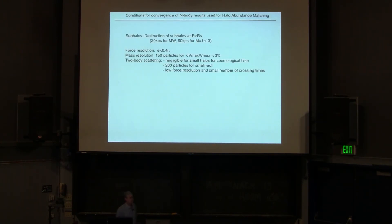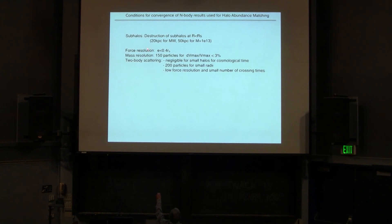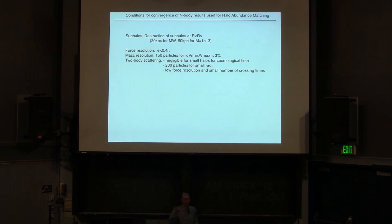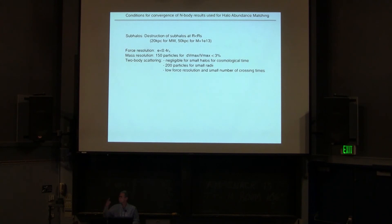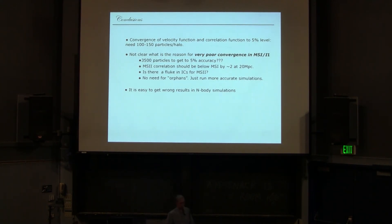To summarize: the conditions needed to run simulations to get convergence of all statistics. Two-body scattering is basically negligible, because the resolution is low and NFW halos are structured such that you can run simulations with even 50 particles and the halo doesn't dissolve — both because of finite halo lifetime and low-resolution simulation properties. N-body simulations are very easy to screw up, but if you know what you're doing and do it right — including the full pipeline — the convergence is achievable at 150 particles.